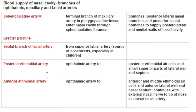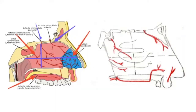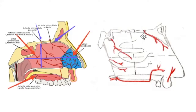The posterior ethmoidal artery descends into the nasal cavity through the cribriform plate and gives branches to both the lateral and medial walls. Recall that the roof comprises three parts: the anterior and posterior sloping parts and the horizontal middle part formed by the cribriform plate. The posterior ethmoidal artery descends through the cribriform plate to give branches to the lateral and medial walls.